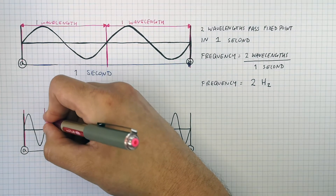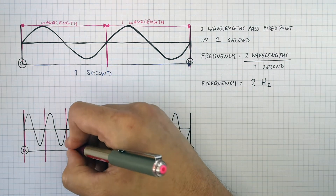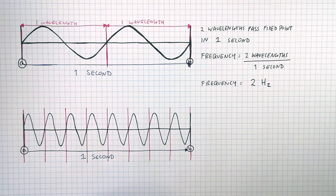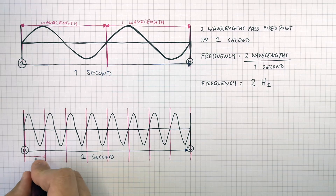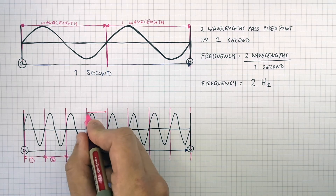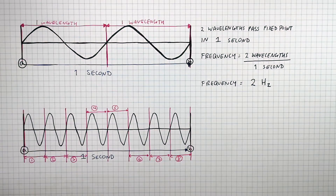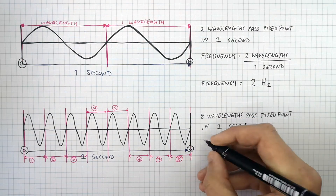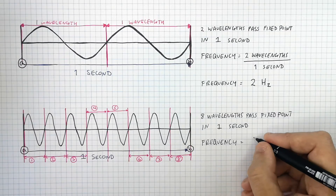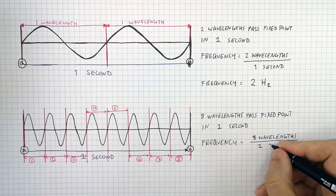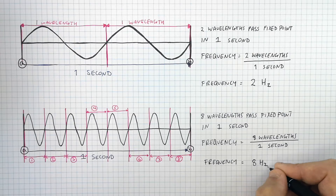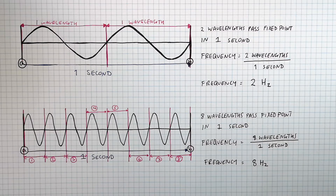So how many waves passed the fixed point? One wave, two waves, three waves, four, five, six, seven — eight waves passed the fixed point between A and B in one second. To calculate the frequency, divide the number of wavelengths — which is eight — by the time, which is one second. So the frequency of this wave is eight hertz. Hertz means the number of waves passing a fixed point every second; in this case it is eight.